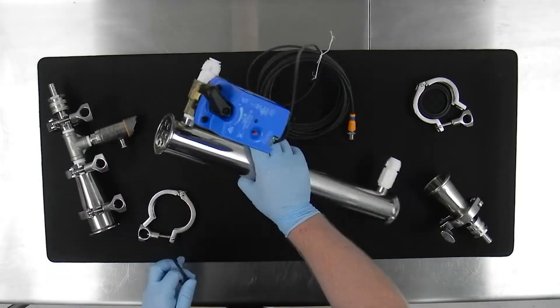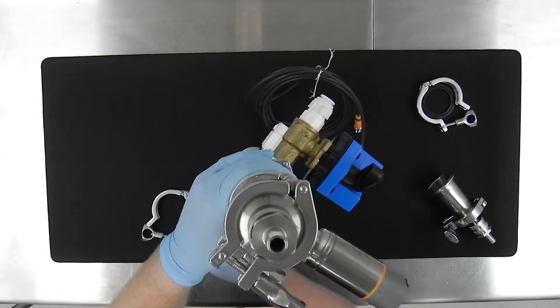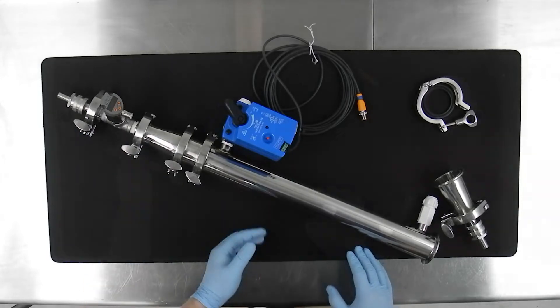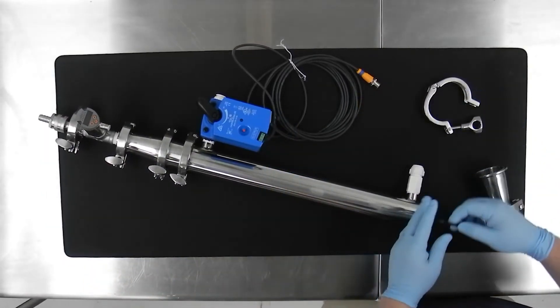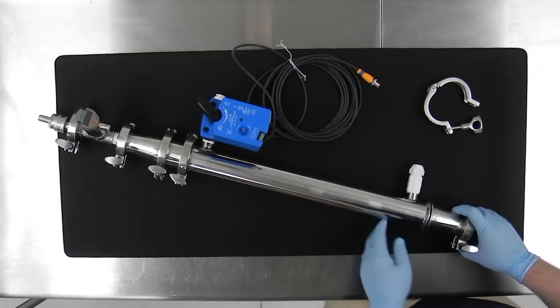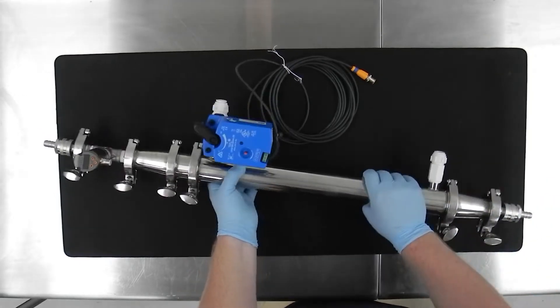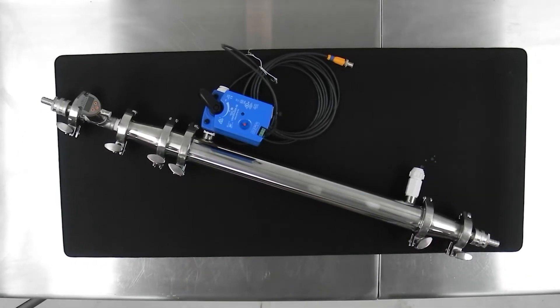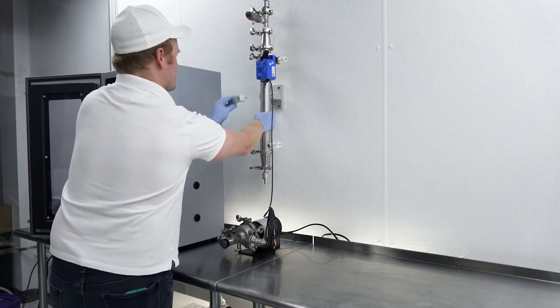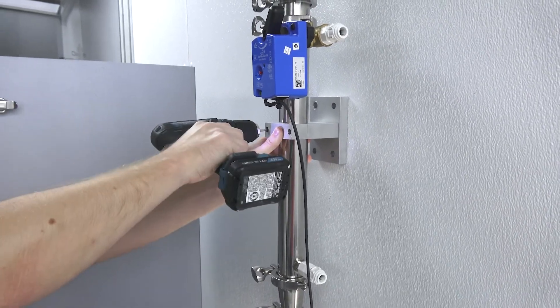First, attach the upper assembly to the heat exchanger body. Next we'll install the lower assembly. Finally, we mount the heat exchanger using the included wall mount bracket. You can also use this bracket to mount the heat exchanger to the side of the sound enclosure.